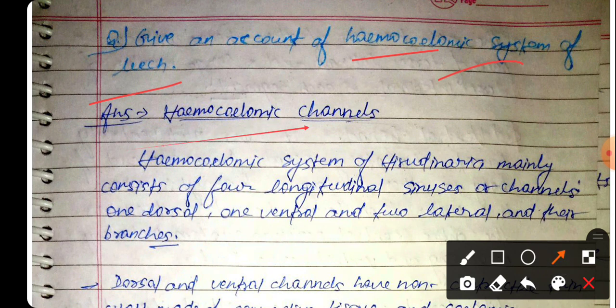The haemocoelic system of Hirudinaria granulosa, the Indian cattle leech, mainly consists of four longitudinal sinuses and channels: one dorsal, one ventral, and two lateral.